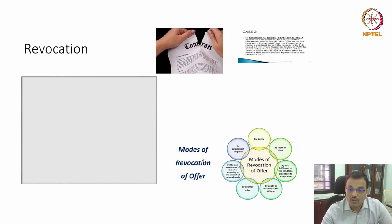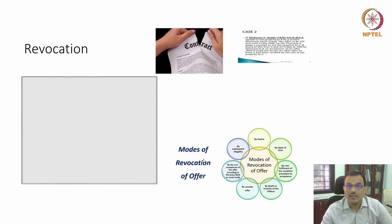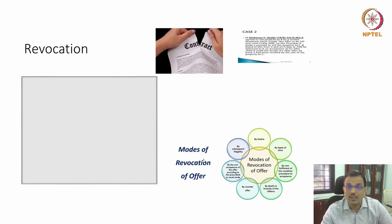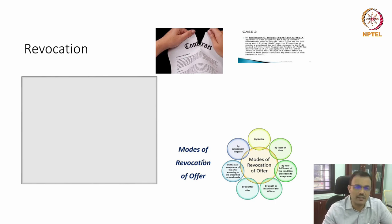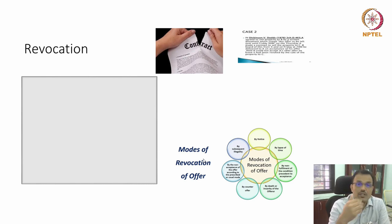Another important mode is termination by death or insanity of the offeror. Since many contracts are based on the personal character of the offeror — for example, a doctor who promises to do surgery — if the doctor dies before acceptance is made, the offer must die with him. Similarly, insanity can also occur within months; since revocation requires an express notice, act, or conduct, death and insanity are grounds for termination by operation of law, not revocation. In India, however, knowledge of the death or insanity is important before it can automatically operate.